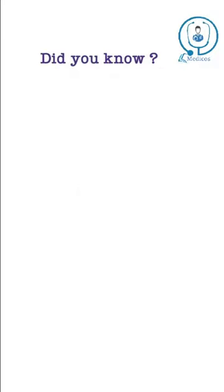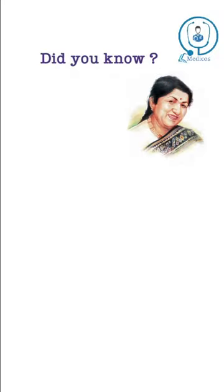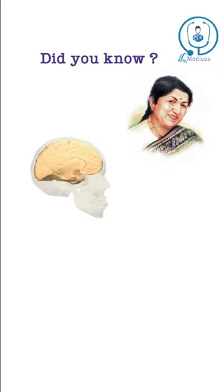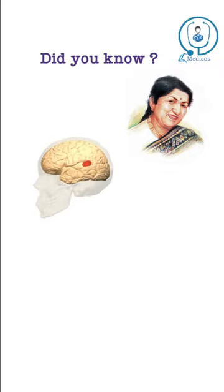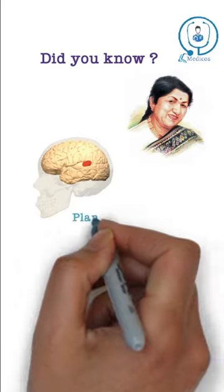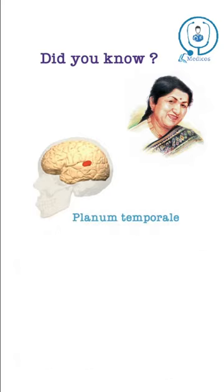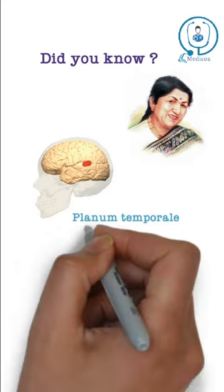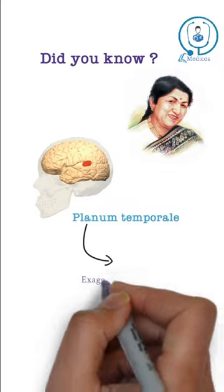Do you know, in musicians, which part of our temporal lobe is exaggeratedly larger? It is the planum temporale. It is larger in the dominant hemisphere in normal individuals, but asymmetrically exaggerated in musicians.